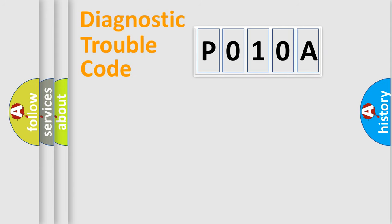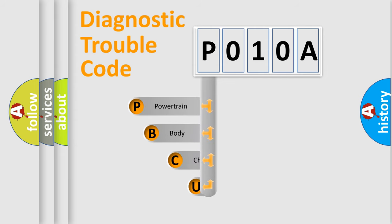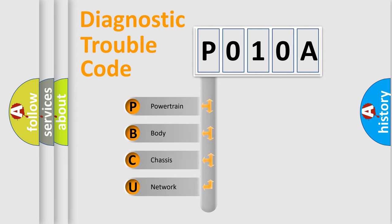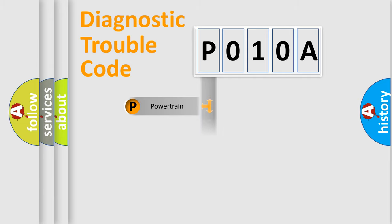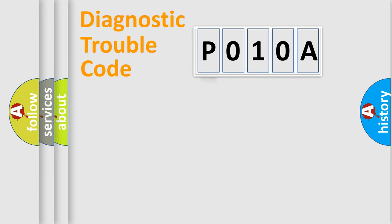First, let's look at the history of diagnostic fault code composition according to the OBD2 protocol, which is unified for all automakers since 2000. We divide the electric system of an automobile into four basic units: Powertrain, Body, Chassis, and Network. This distribution is defined in the first character of the code.